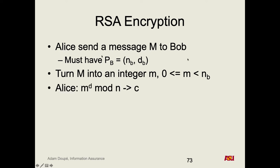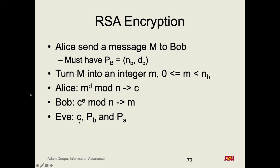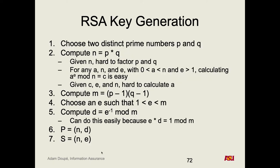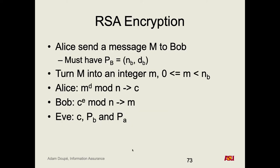So we turn our message into an integer that's less than N. Alice takes the message lowercase m, turns it into an integer, raises that to the D power mod N — D is Bob's public key parameter — to get ciphertext C, which she sends. Bob can take C, raise it to the E, which is part of his secret parameter that he never gives anyone, mod N, and that actually gives back the message. This is just a brief overview of this encryption algorithm. There's an undergrad crypto class if you want to get into this more.